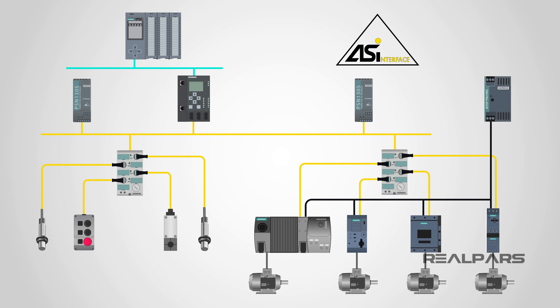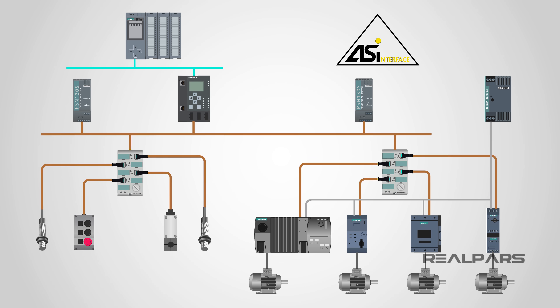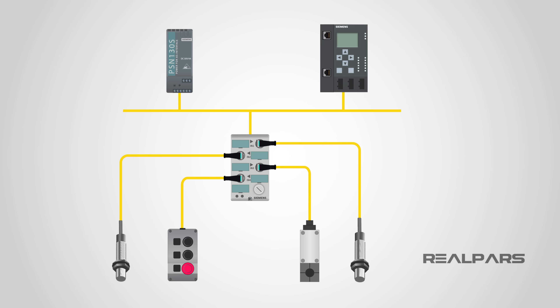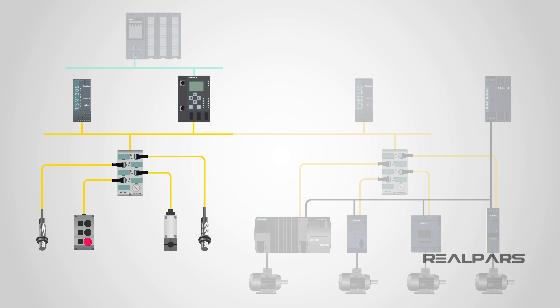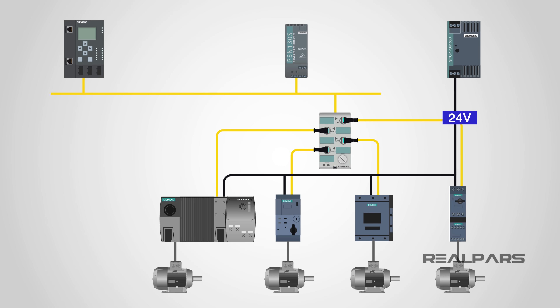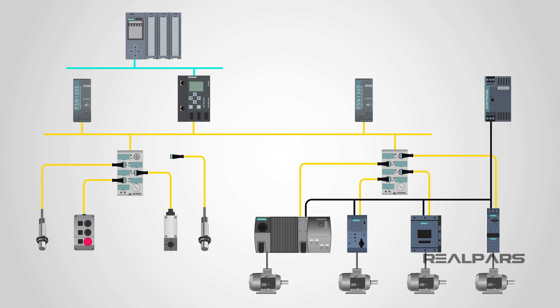Next up is the AS Interface cable. There are two cables required in an AS Interface system: a yellow cable to carry the power and data to sensors, and a black cable to carry 24 volts to actuators. There is no fiddly wiring to do though, because these use a special piercing technology, which means that the nodes can be literally snapped onto the cable at any point.